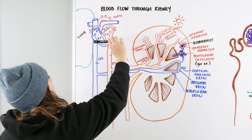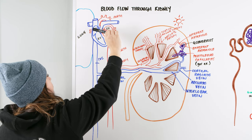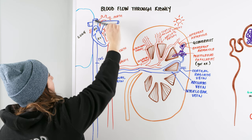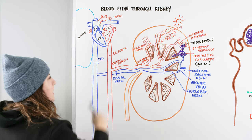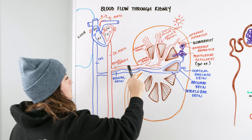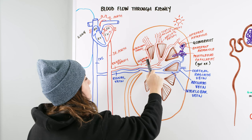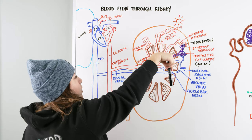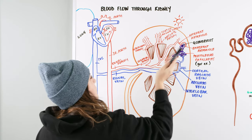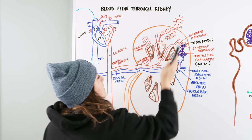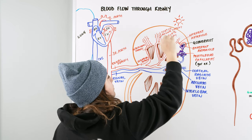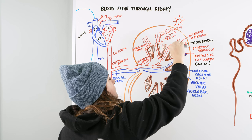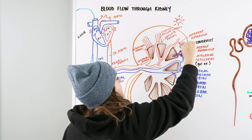Starting at the heart: blood goes from the inferior vena cava into the right atrium, right ventricle, out to the lungs, back to the left atria, left ventricle, and out through the aorta. Through the descending aorta, we go through the renal artery into the segmental artery, into the interlobar, through the arcuate, and to the cortical radiate arteries. Those cortical radiate arteries throw off the afferent arterioles, and glomerular filtration occurs.